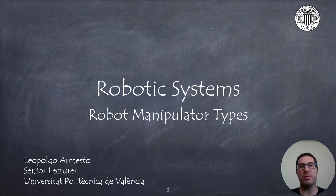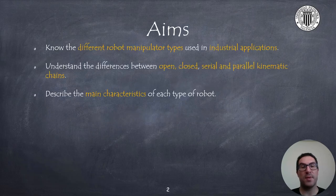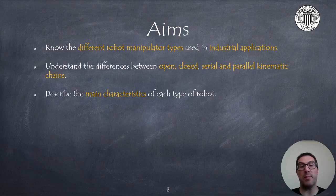In this presentation I will talk about different robot manipulator types used in many industrial applications. The aims are to know the different robot types used in industrial applications, to understand the difference between robots using open and closed kinematic chains, the differences between serial and parallel structures, and to describe the main characteristics of each robot type.